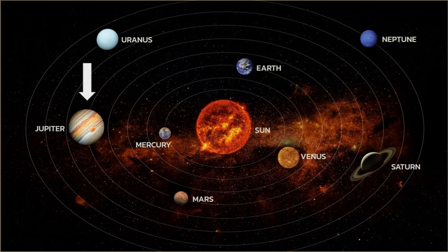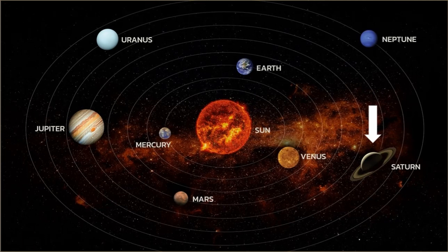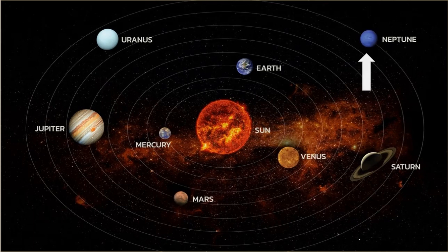The fifth planet is Jupiter, the largest of all the planets. The sixth planet is Saturn, very well known because it's the only planet that has rings around it. The seventh planet is Uranus. And the eighth is Neptune, the coldest of all the planets.